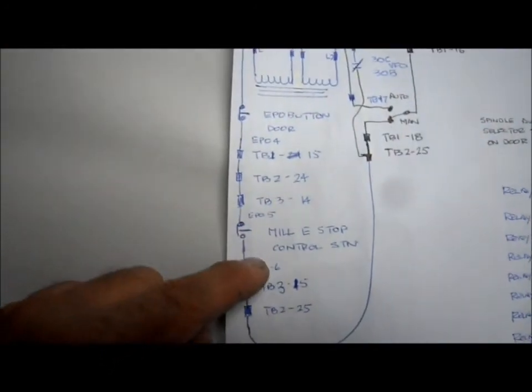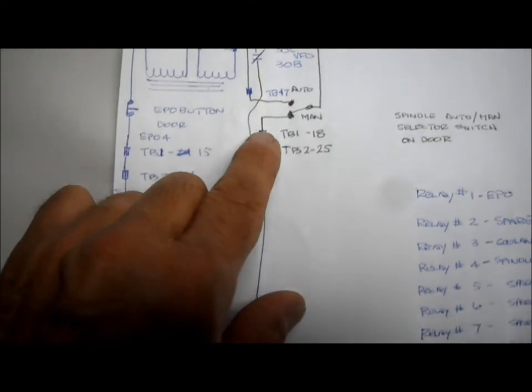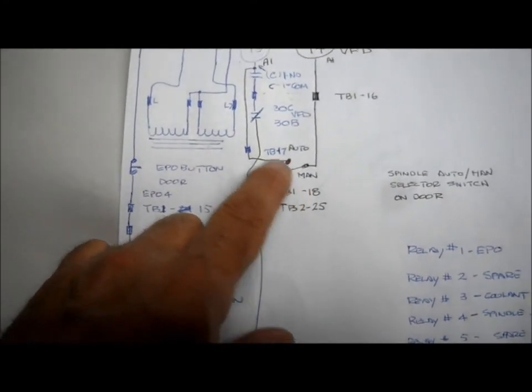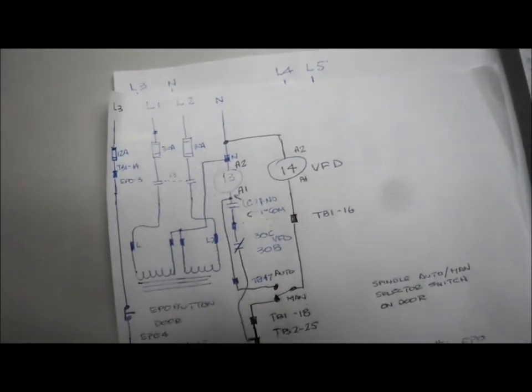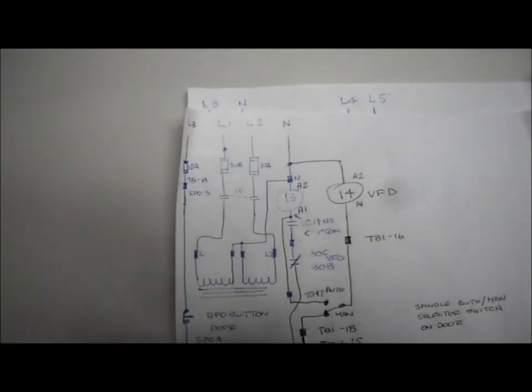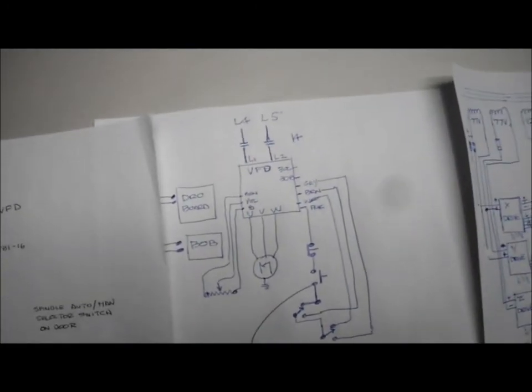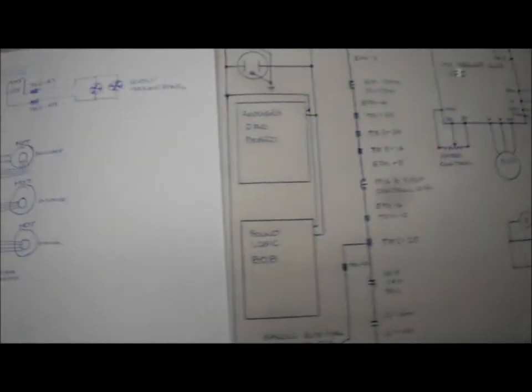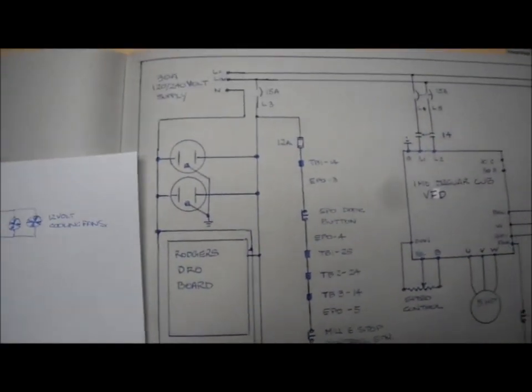Then jumps from trip to terminal block two to terminal 24 and keeps working its way all the way down, as you can see, until it comes back into the hand selector switches and the relays and the contactors. That rough idea, you kind of get it on paper and an idea what to do, and then you bring it over.